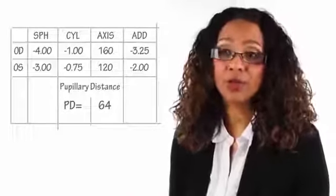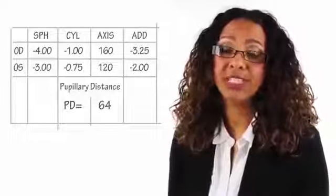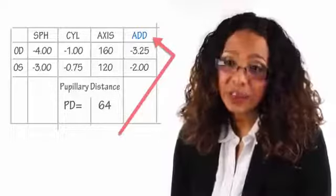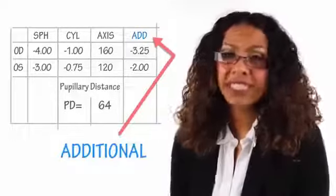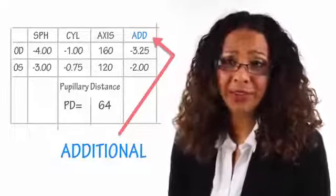Now this next term you'll see on your prescription is ADD, which stands for additional. ADD is used for bifocal and progressive lenses, and it's something which helps the vision by adding an additional feature onto the lens to help with activities such as reading or watching television.